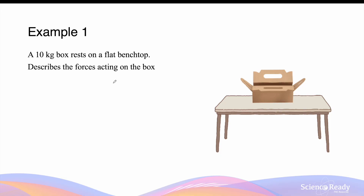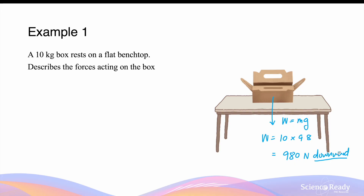Let's go through some examples of analyzing forces acting on objects in different scenarios. We have a 10 kilogram box resting on a flat bench top. Assuming the bench top and the box are on the surface of Earth, there's going to be a weight force that acts towards the ground, given by mg — the mass of the box times the gravitational acceleration. The mass is 10 kilograms multiplied by 9.8 m/s², giving 98N downward. Since the box is in contact with the bench top, there's also a normal force that acts upwards, perpendicular to the surface, present to prevent the box from going through the bench top.